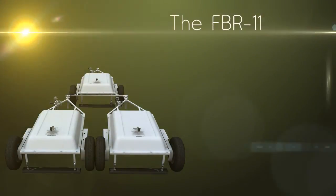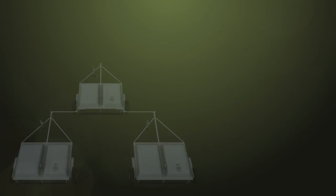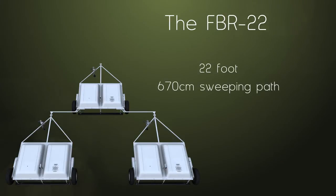The FBR-11 standard tri-link assembly with an 11 foot 5 inch, 348 cm sweeping path. And the FBR-22 super tri-link assembly with a 22 foot, 670 cm sweeping path.